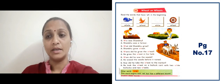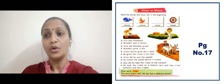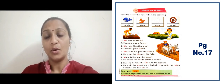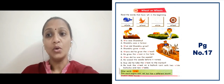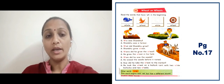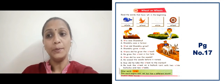Now in the next slide there is a topic 'Wheat on Wheels' on page number 17. Here we have to see words that start with WH. 'Whale' — whale is the fish. 'Wheat' — wheat. 'White' — white is the color.